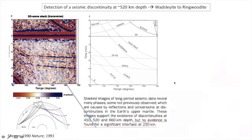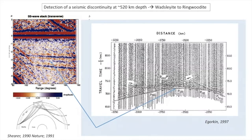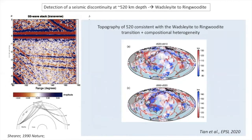The first discontinuity is the 520 kilometer one. It was first documented in 1990 using global stacks of seismograms highlighting SS precursors. Concerns were raised that this could be an artifact from side lobes related to the 460 kilometer discontinuities nearby, but later this horizon was also detected at shorter periods within long-range seismic profiles. It was also proposed that it was associated with the wadsleyite to ringwoodite phase transition in the olivine system. Recent studies of the topography of the 520 kilometer discontinuity show that it is consistent with this wadsleyite to ringwoodite Clapeyron slope, provided one accounts for the additional presence of some compositional variations.